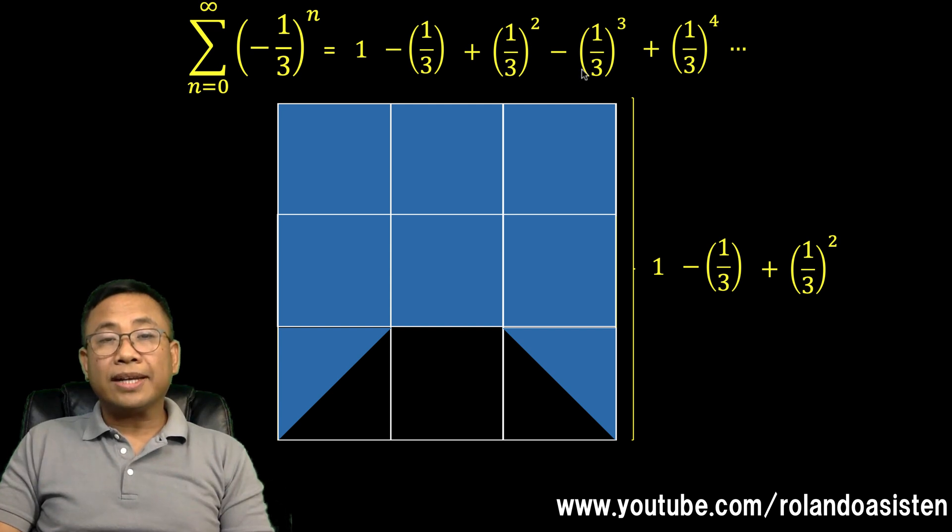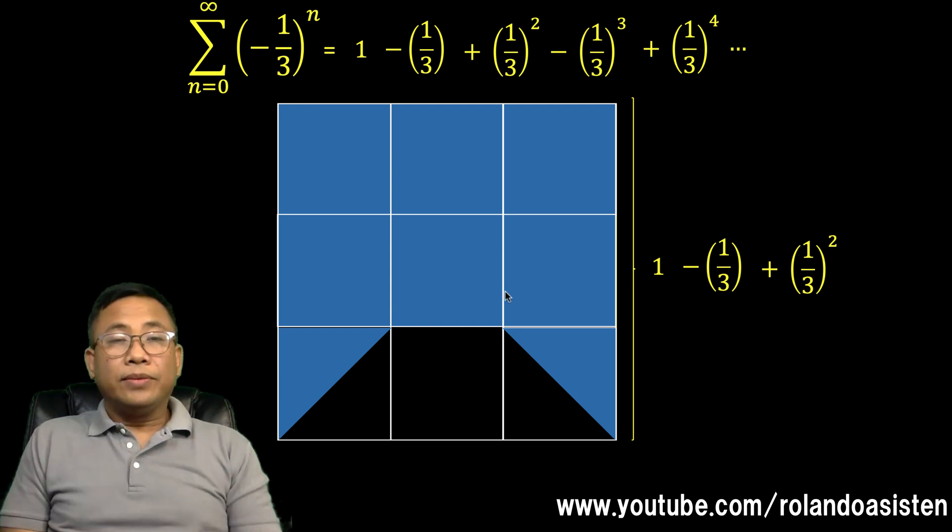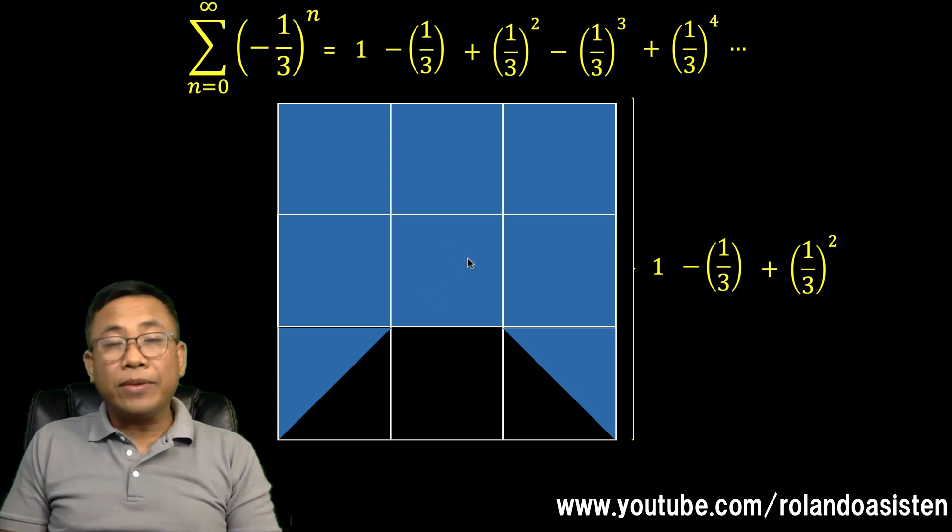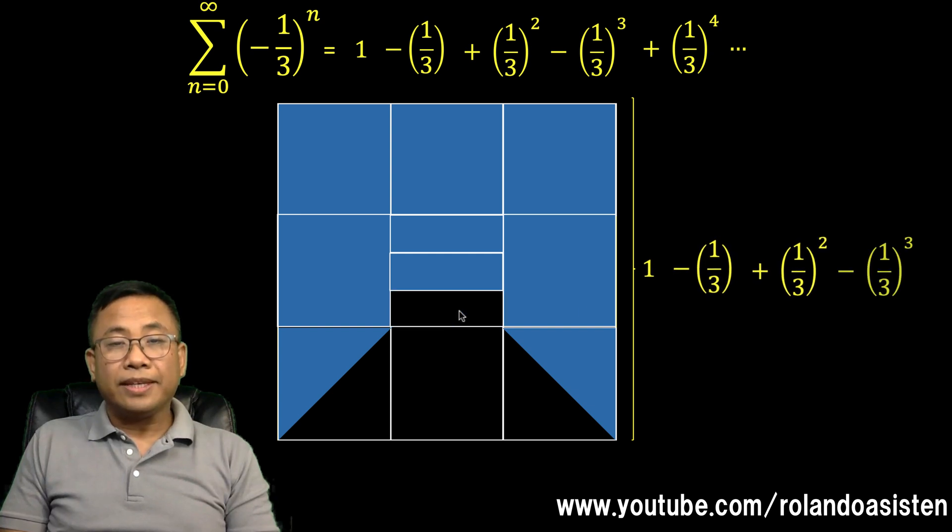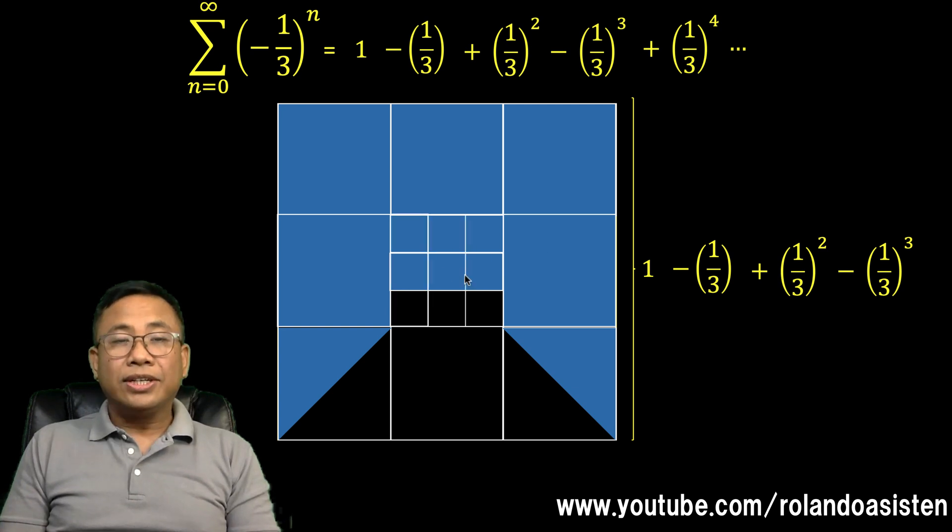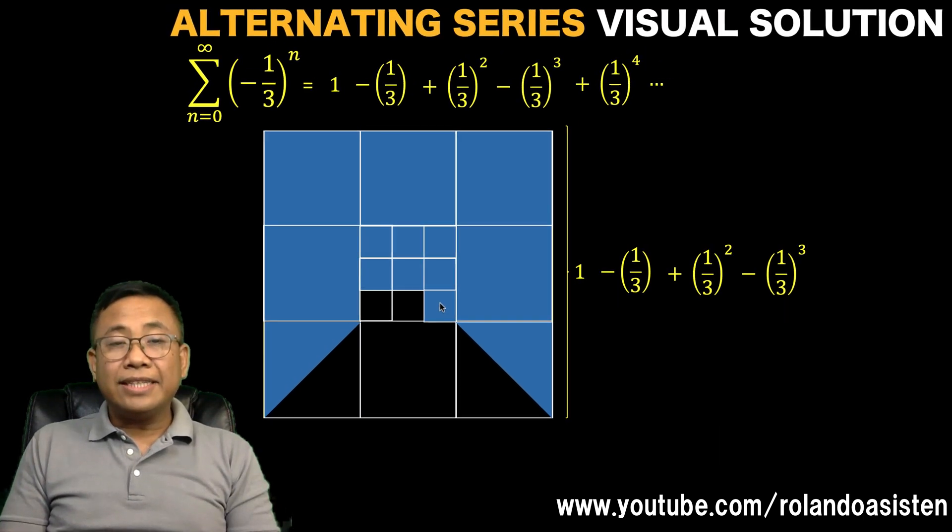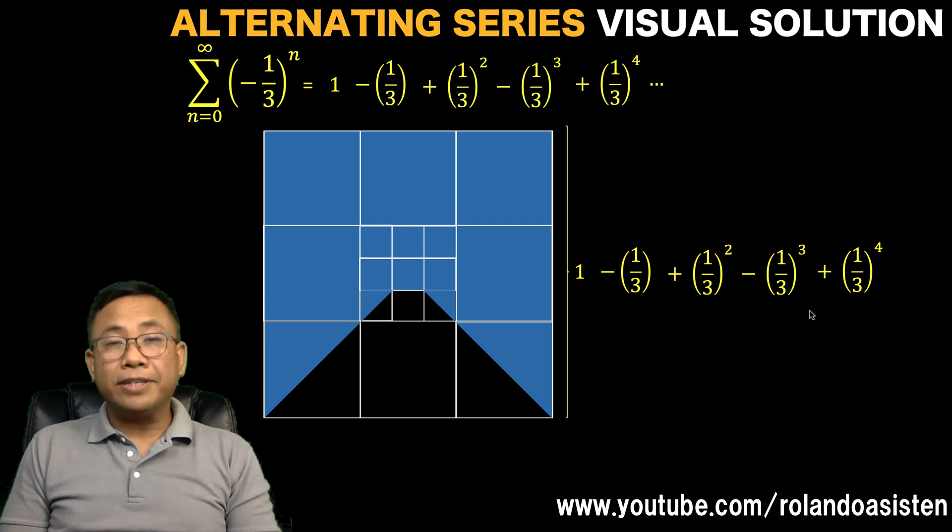Next, let's go to the fourth term. We are going to subtract (1/3)^3, or 1/27. We can achieve that by dividing this small square into three equal parts. One part would be 1/27, or (1/3)^3. We are going to subtract (1/3)^3, so let's subtract this lower part. This is now the first four terms. Then the next term says we are going to add (1/3)^4. So let's divide this into nine equal parts, and let's add (1/3)^4. Let's cut this into two right triangles and spread those triangles out like this. The blue shaded part is now our visual representation of the first five terms.